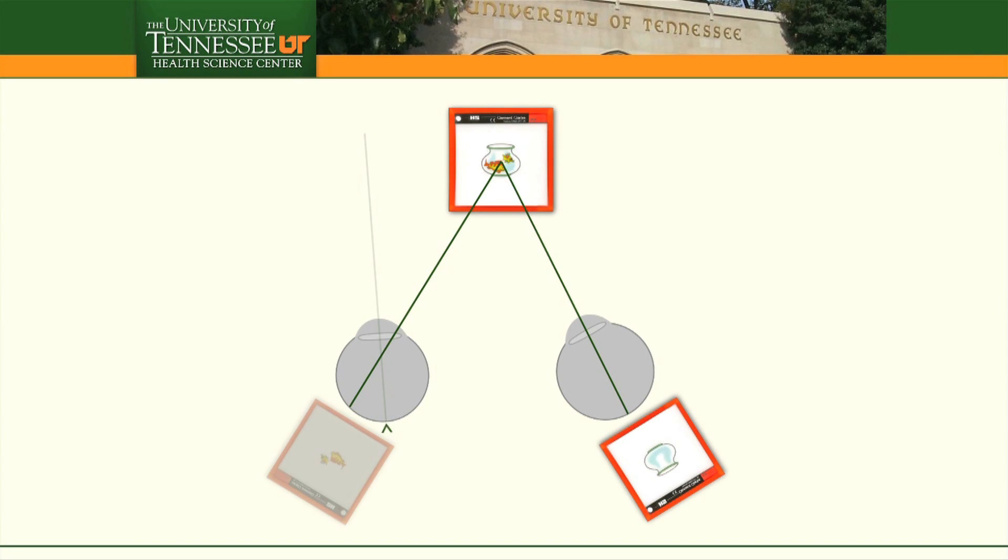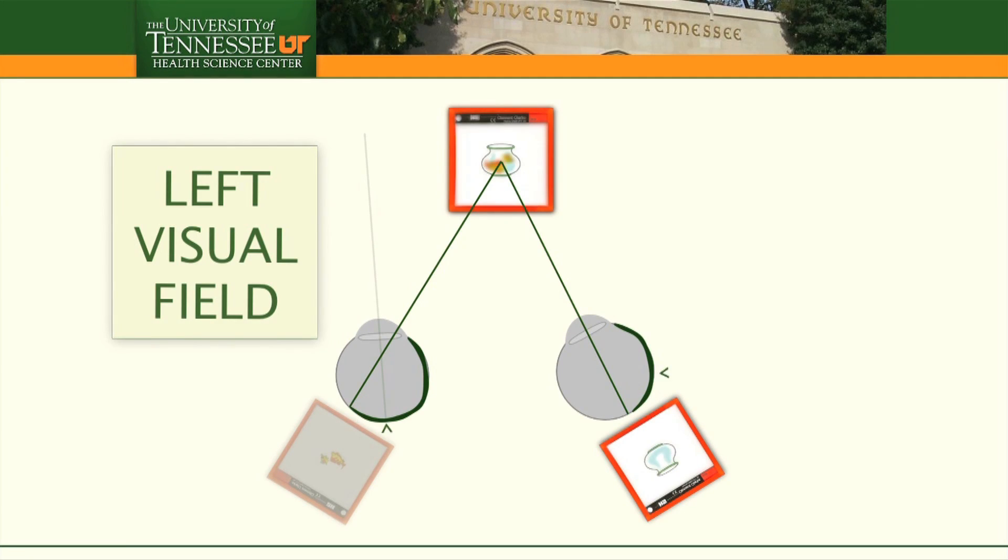Now the fovea of the deviated eye is subjectively located on nasal retina. And instead of corresponding to the fovea in the other eye, this point now corresponds to the temporal retina in the other eye.